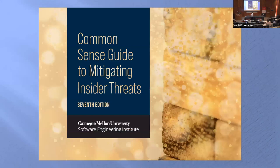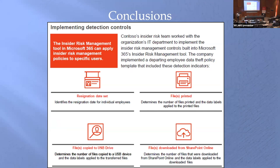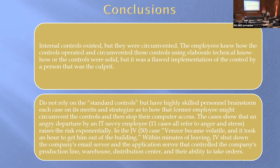Carnegie Mellon University has this common sense guide — it's very readable and very good, covering almost everything you ever want to do here. Microsoft talks about how we can analyze our data: we start off with the resignation data set, then calculate how many files were printed, downloaded, or copied to a USB drive. The problem there is it's all too terribly neat, and you need this resignation data set before you go and analyze. People do their dirty work before they leave, before they announce their resignation.